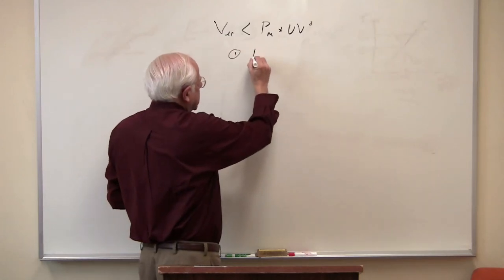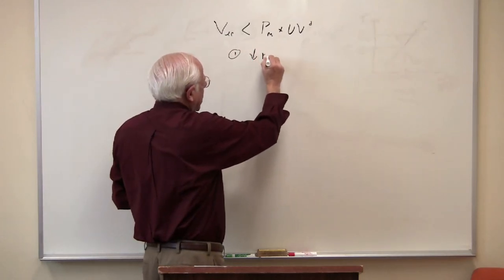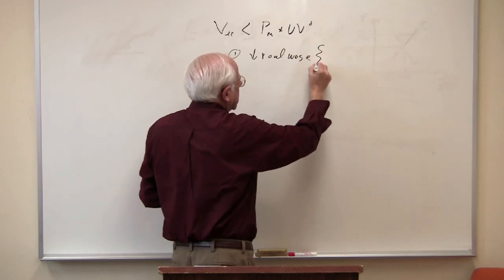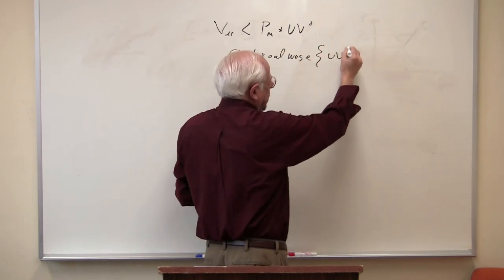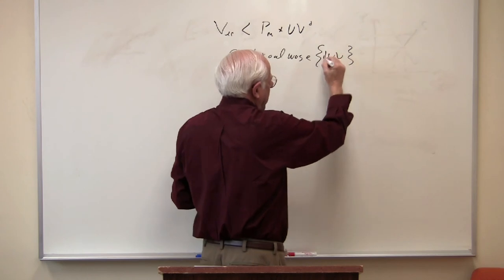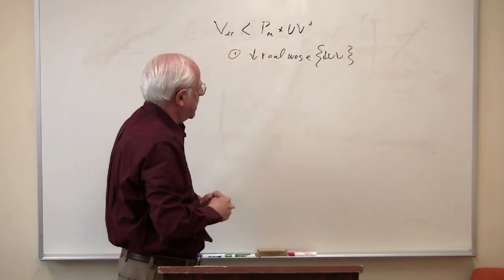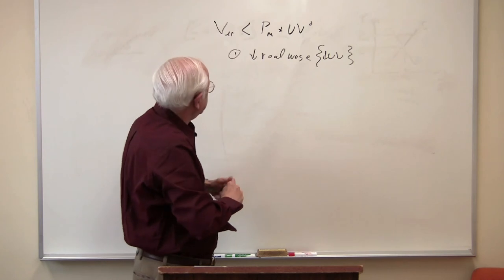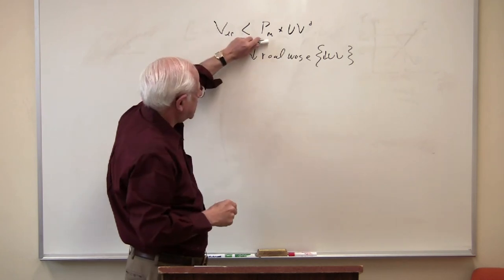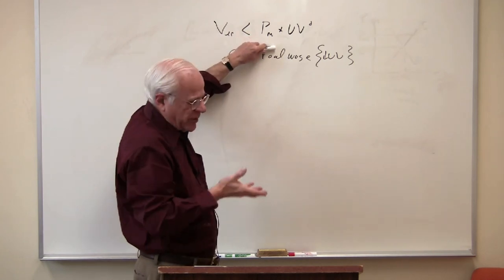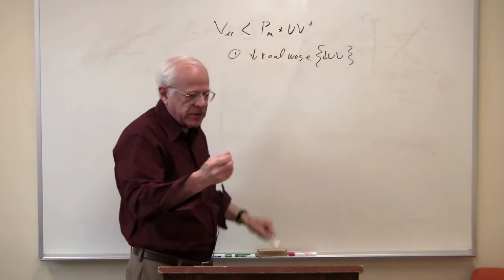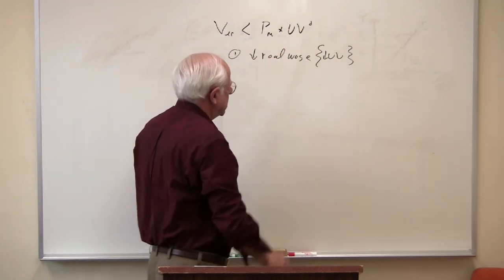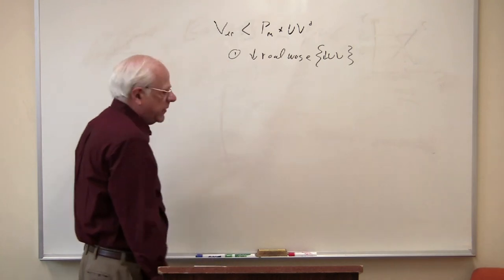One possibility is that the real wage falls — that is, the use values purchased by the workers falls. So the workers receiving the same wages but paying higher prices, the only way they can maintain this balance is to lower their consumption. That's what this is: lowering their consumption of consumer goods.